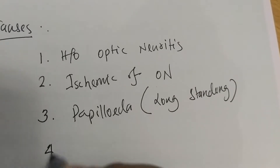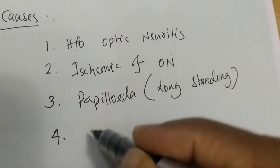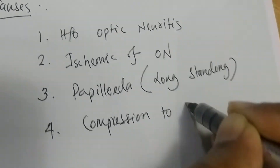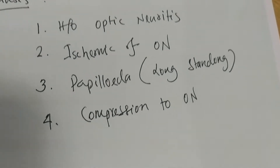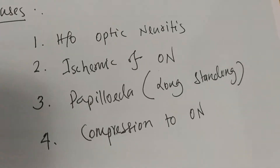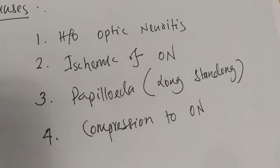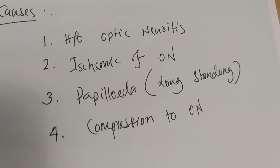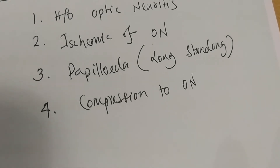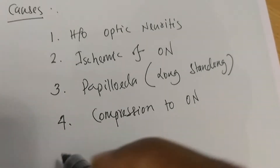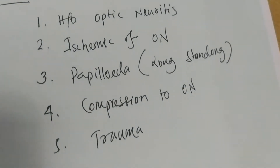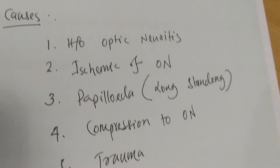Cause number four: compression of the optic nerve. If any lesion, like intracranial malignancy, compresses the optic nerve over a long time, this can cause optic nerve fiber loss, leading to optic atrophy. Cause number five: any type of trauma — ocular trauma or intracranial trauma — may also lead to optic atrophy.